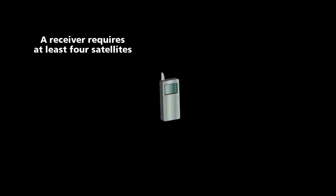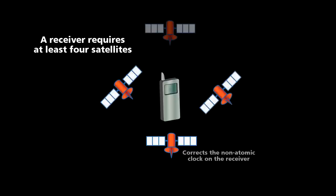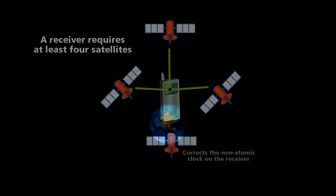A GPS receiver uses the position of four of these satellites to locate itself: one to correct the time on the receiver and three to locate its position. Here's how it works.